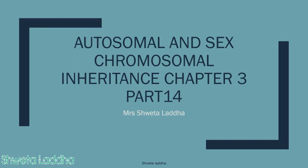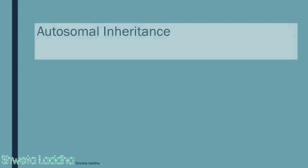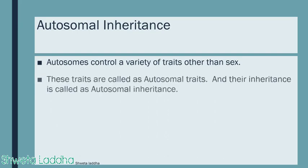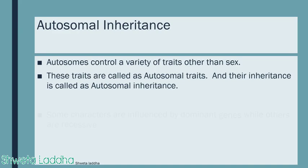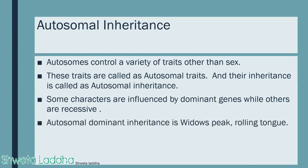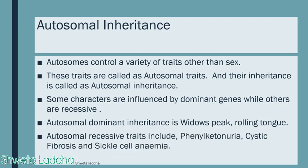Welcome to part 14, the last part of chapter 3 on inheritance and variation. Today we will discuss autosomal and sex chromosomal inheritance. Autosomes control a variety of traits other than sex; these are called autosomal traits. Some characters are influenced by dominant genes while others are recessive. Autosomal dominant traits include widow's peak and rolling tongue, whereas autosomal recessive traits include phenylketonuria, cystic fibrosis, and sickle cell anemia.